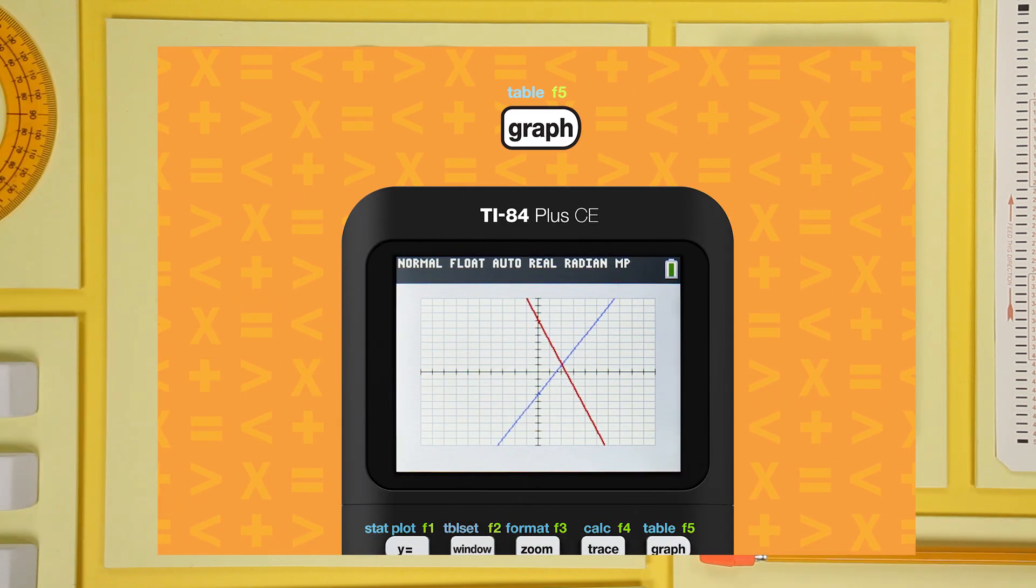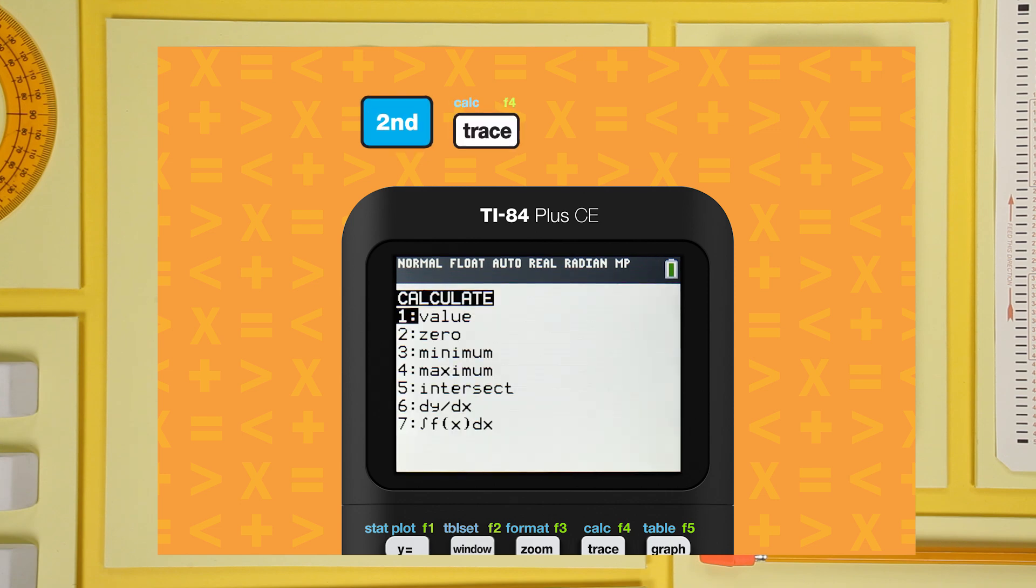Press the graph key and your screen should look like this. Now find the intersection by pressing second calc. It's the blue command over the trace key. Then arrow down to select intersect and press enter.